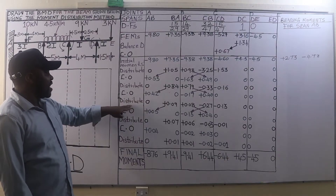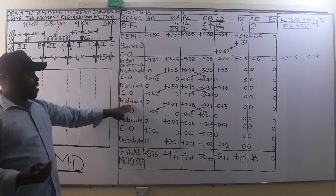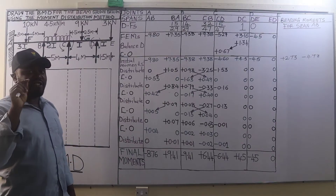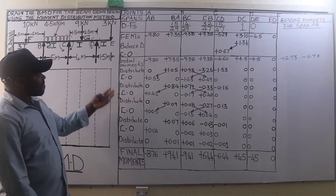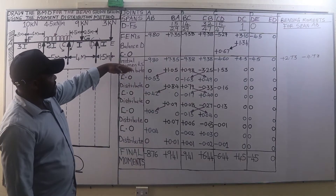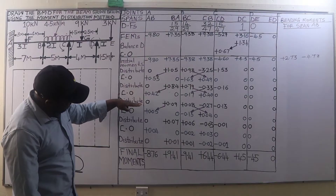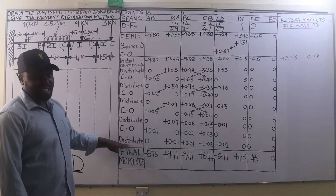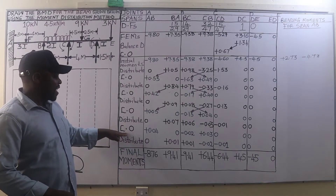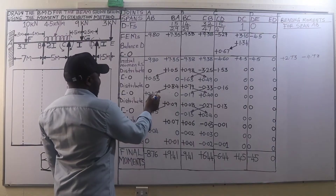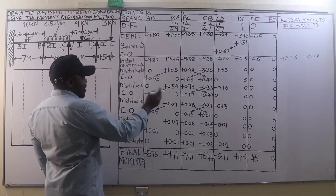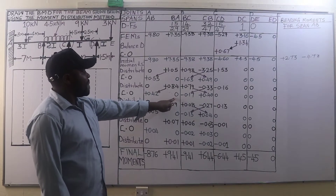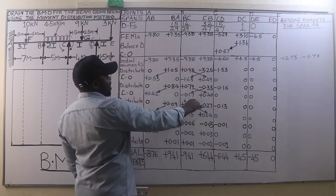After carrying over we distribute again. Remember, we follow these steps until we arrive at the required degree of precision: distribute, carry over, distribute, carry over — and so on. We always say you can't stop at carrying over, so after carrying over we distribute again. On member B we have an excess moment of positive 0.17.